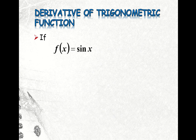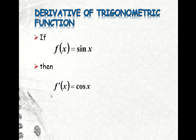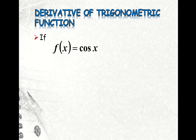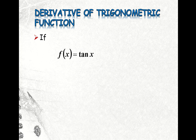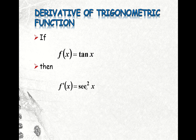Now, if f(x) = sin(x), then the derivative of sin(x) is equal to cos(x), or f'(x) = cos(x). If f(x) = cos(x), then the derivative is equal to minus sin(x), or f'(x) = −sin(x). If f(x) = tan(x), then the derivative of tan(x) is equal to secant squared x, or f'(x) = sec²(x).